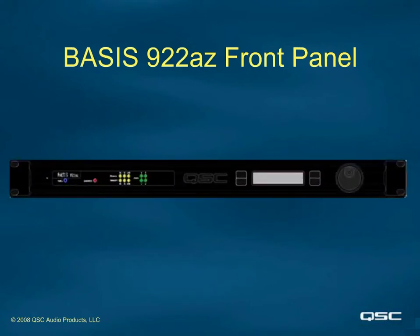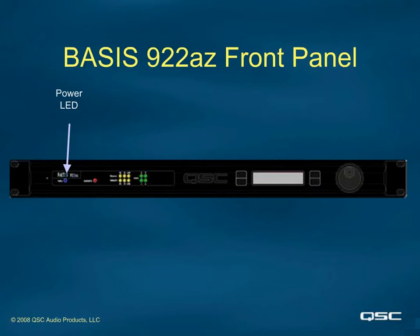This screen shows the front panel of the Basis. There are a lot of different buttons, LEDs, and other indicators. These include the power LED — there is no on-off switch for the device, so this blue LED lets you know that the Basis is receiving AC power. The Basis, like most other Ethernet network equipment, was designed to be left powered on 24 hours a day, 7 days a week, 365 days a year.